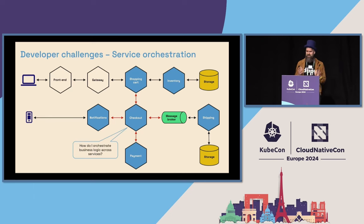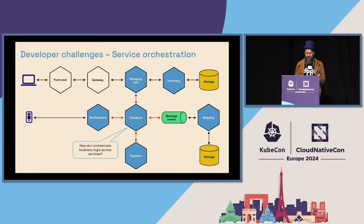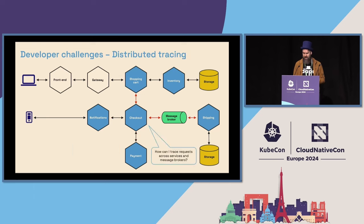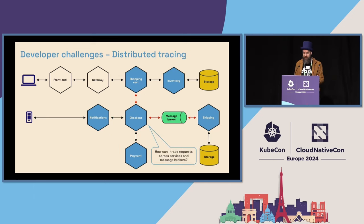One of these things is how you do proper service orchestration — how you can make calls across different services in a reliable way, and how you do distributed tracing across services and also across message brokers.